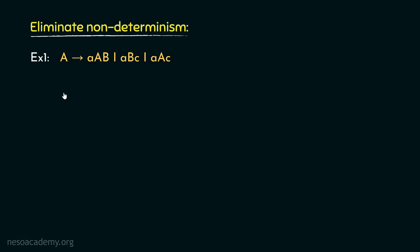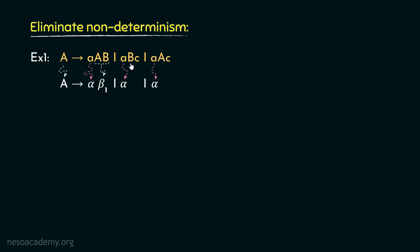Observe: this non-terminal A is the generic non-terminal. If we observe closely, we can figure out the common prefixes of all the rules. In this case, it is the lowercase a's. Now, apart from the common prefix, the remaining portions of the right-hand sides are to be considered as betas. So, AB is beta 1, b followed by lowercase c is beta 2, and A followed by small c is beta 3. We have now identified all the components.